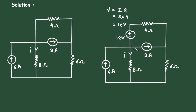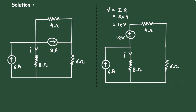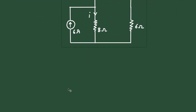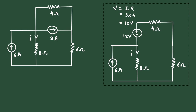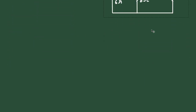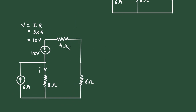Now we can erase this current source. Next, we can see this 4 ohm and 6 ohm are connected in series, so we can add them and make it a single resistor of 10 ohm.